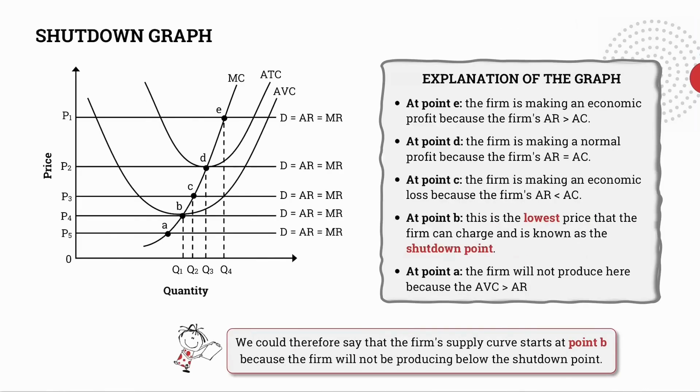Let's go through it again. At point E the firm is making an economic profit because the firm's average revenue exceeds its average costs. Remember Grade 12s when we're talking about average costs it's exactly the same as average total costs. So ATC is in fact exactly the same as AC.